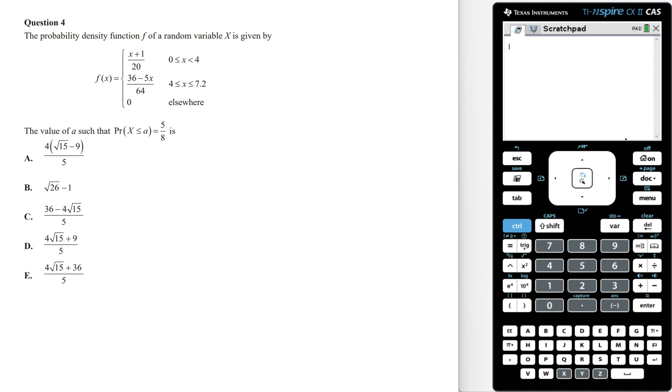f of x is a piecewise function. We can see that the first part is going to be a straight line from where x is equal to 0 to where x is equal to 4, and the second part is going to be a negative line from where x is equal to 4 to where x is equal to 7.2, and so its graph will look something like this.